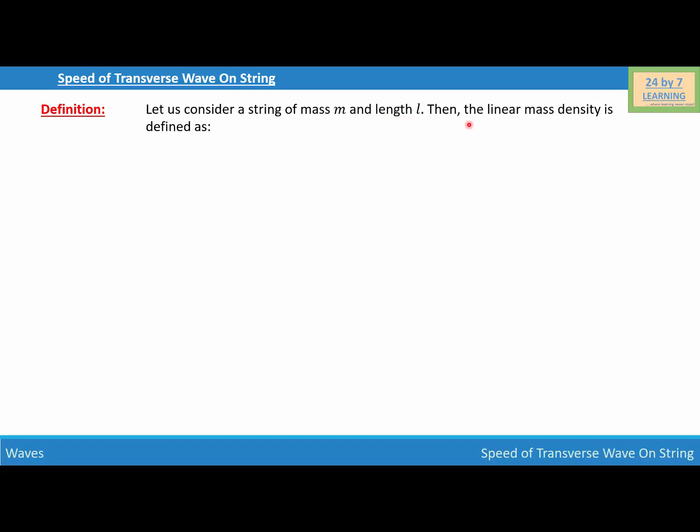Then the linear mass density is defined as linear mass density equals mass of the string over length of the string.